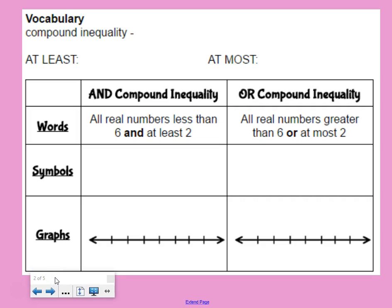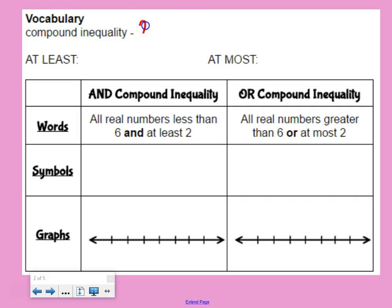First off, let's talk about writing and graphing the compound inequality. Our vocabulary: a compound inequality is two inequalities joined by the word 'and' or the word 'or'.